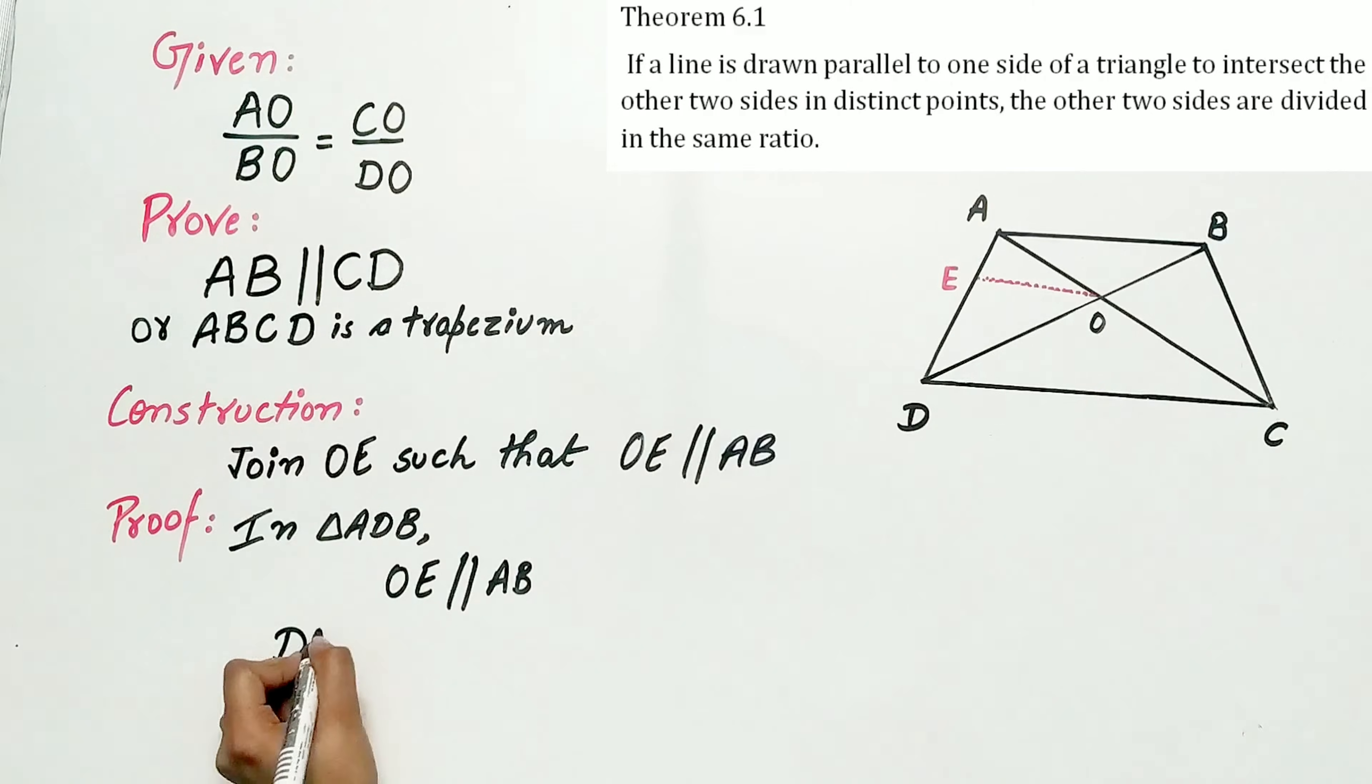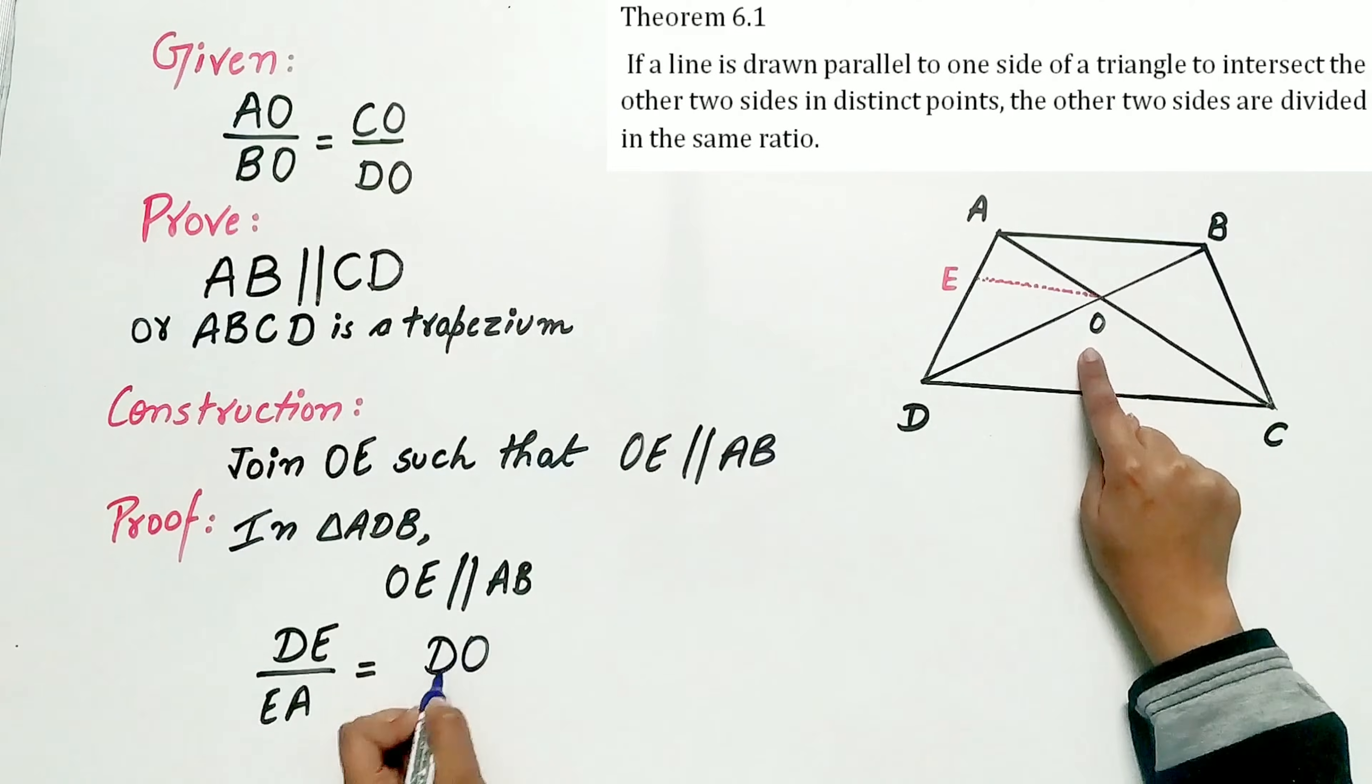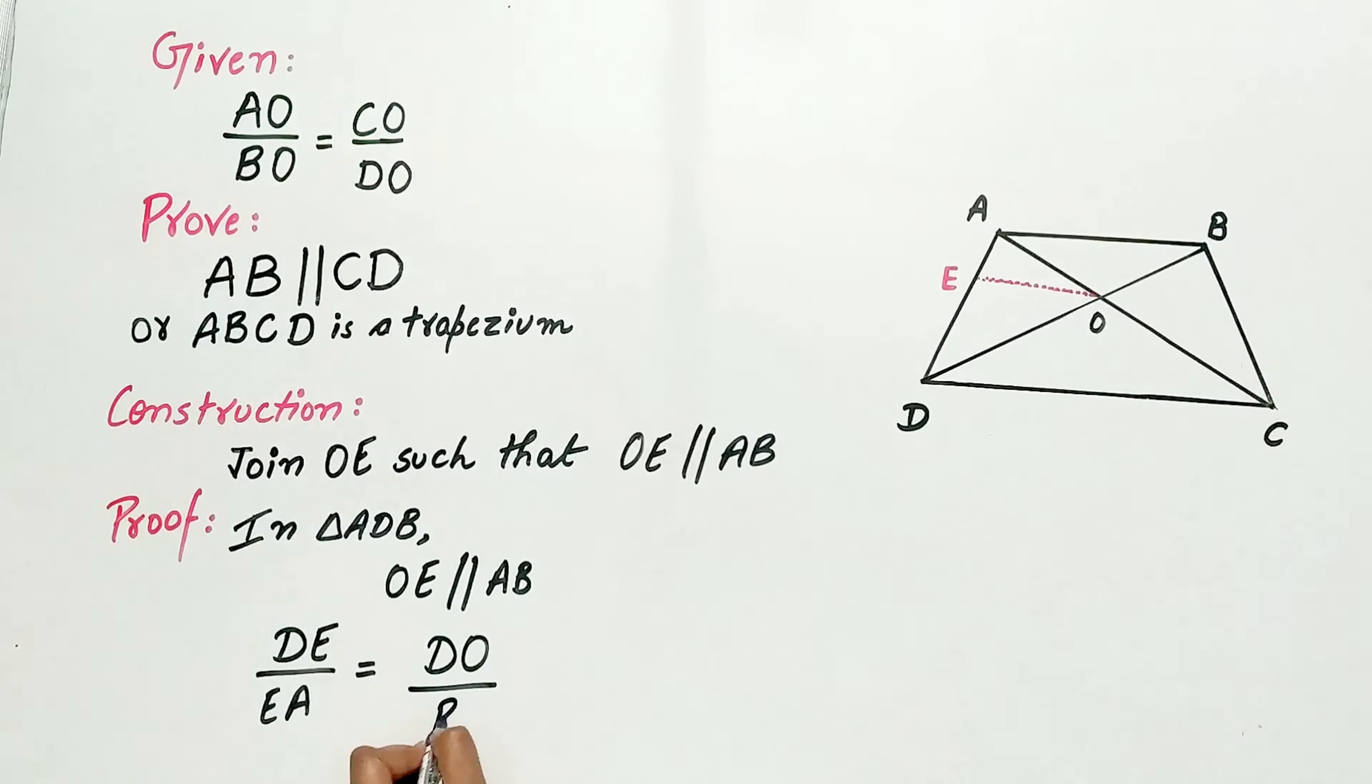DE by EA is equal to DO by BO. Now let's mark it as equation 1.